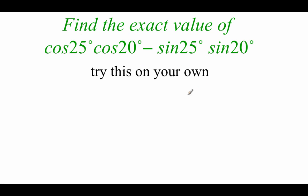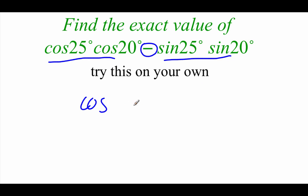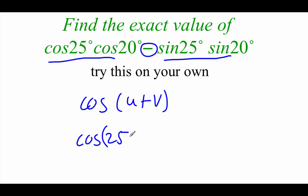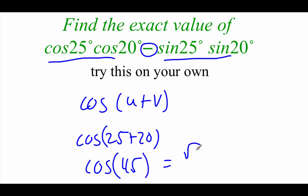Feel free to pause and try this one on your own. I see a cosine times a cosine minus a sine times a sine, which makes me think of the cosine sum formula. So we've got the cosine of 25 plus 20, and 25 plus 20 is the cosine of 45, which from the unit circle is root 2 over 2.